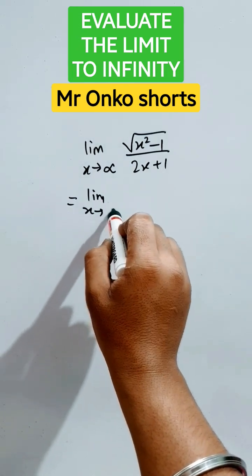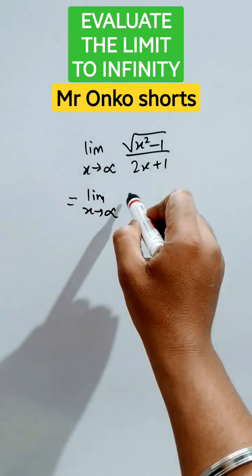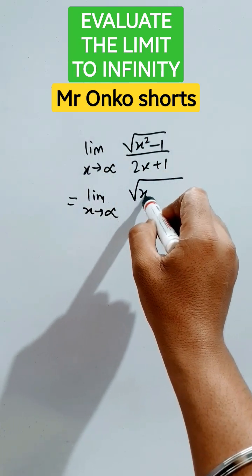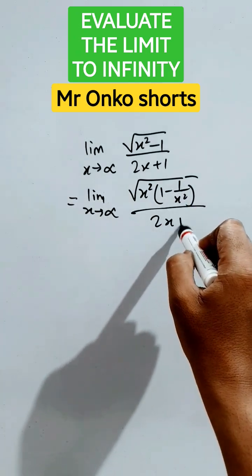Let's write limit x tends to infinity. Take x square common from this, that is x square into 1 minus 1 by x square divided by 2x plus 1.